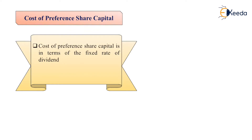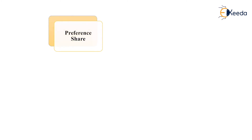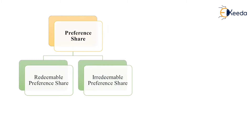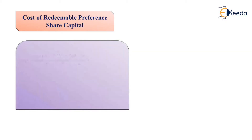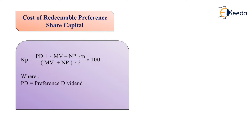Then comes the share capital. The cost of preference share capital is expressed in terms of the fixed rate of dividend. It is calculated as after-tax cost — note that debentures are calculated on a before-tax basis, while preference shares are calculated on an after-tax basis. These are again divided into two types: redeemable and irredeemable. For redeemable preference share capital, the formula for Kp uses PD as preference dividend, MV as market value, and NP as net proceeds.